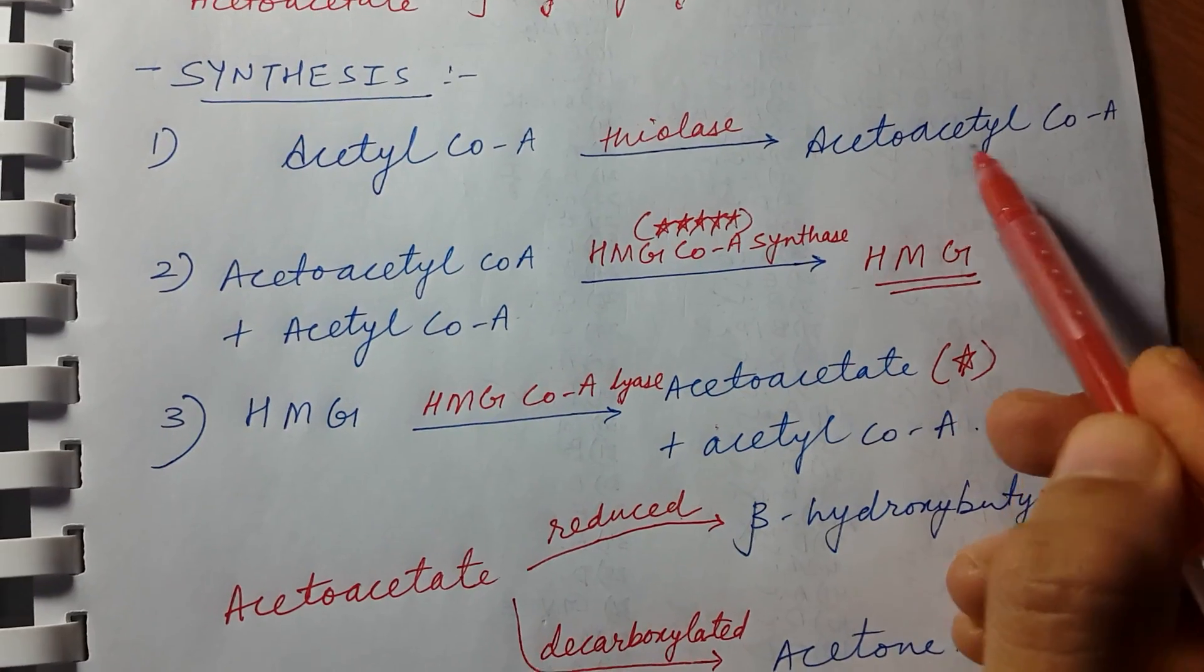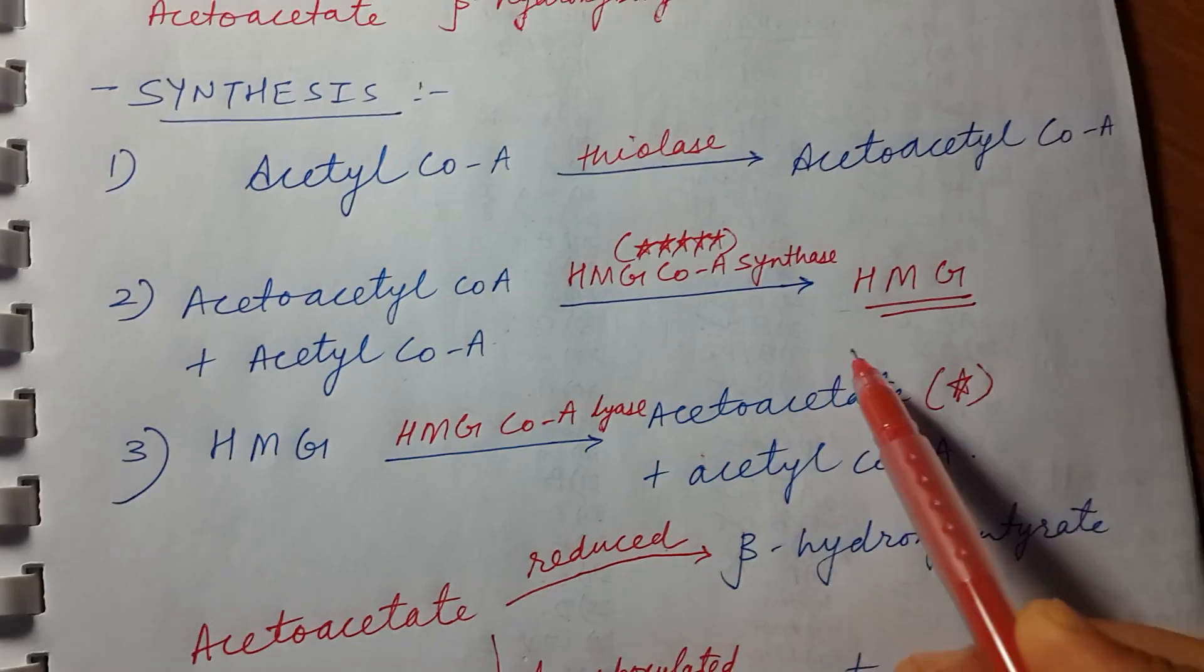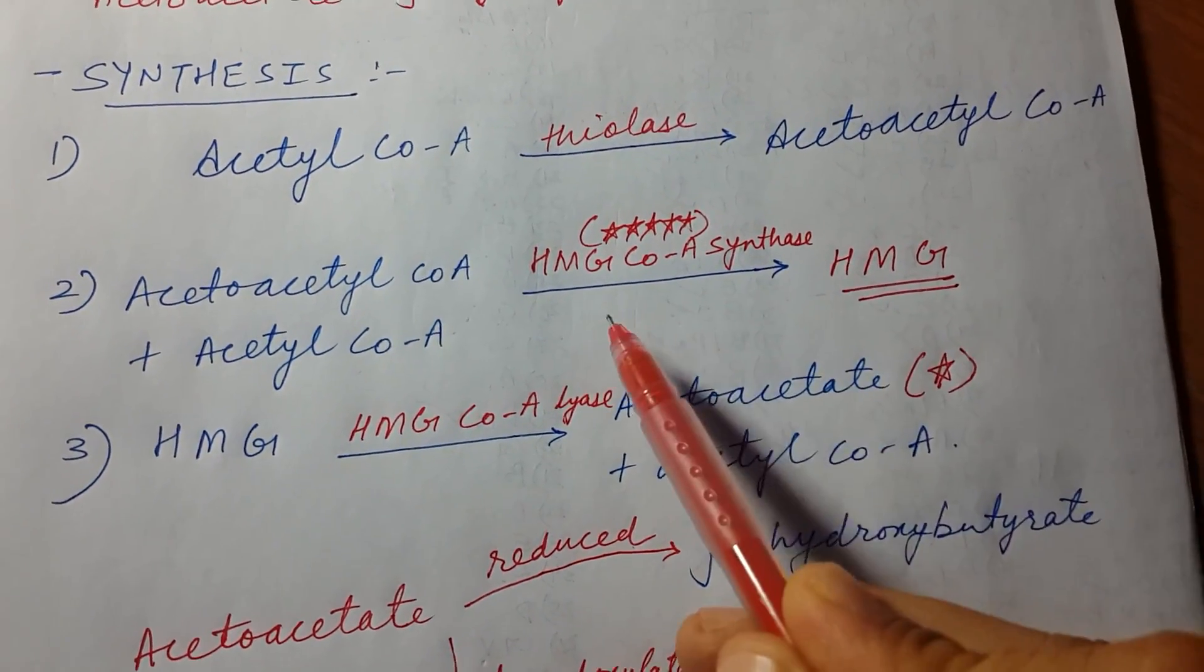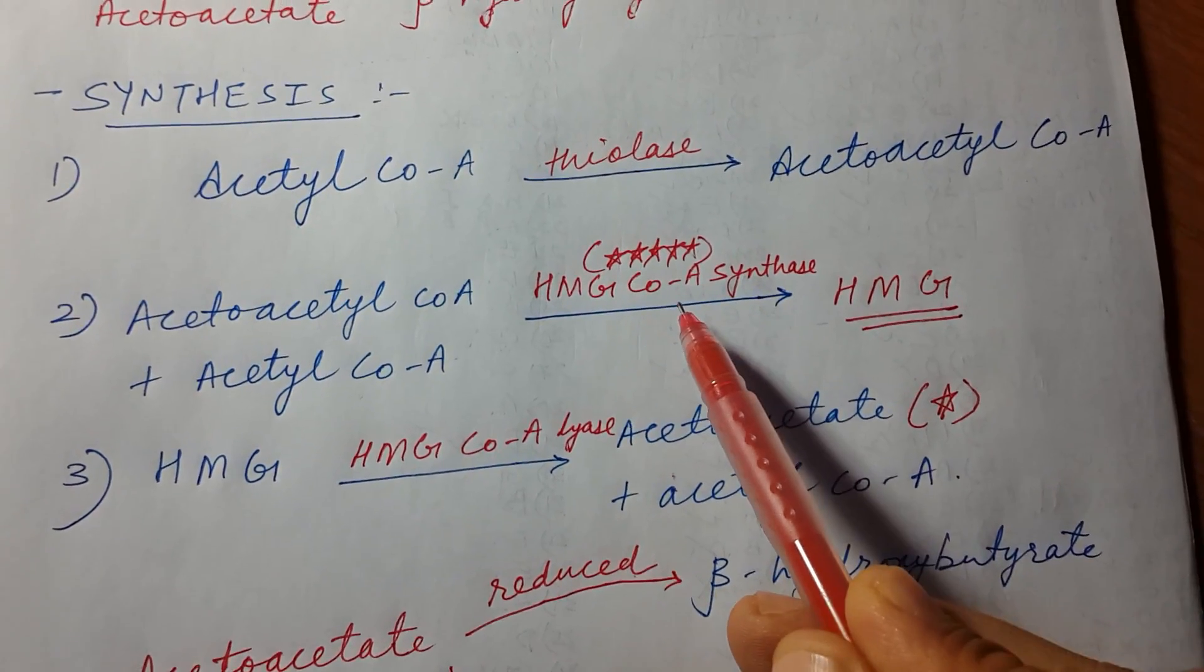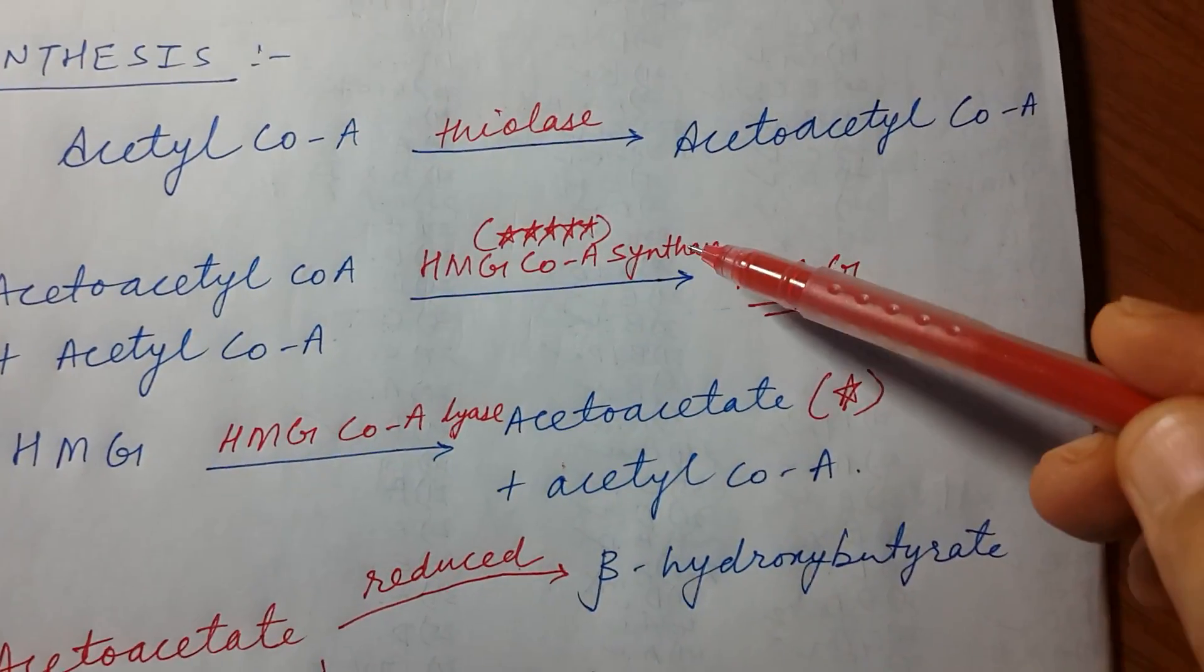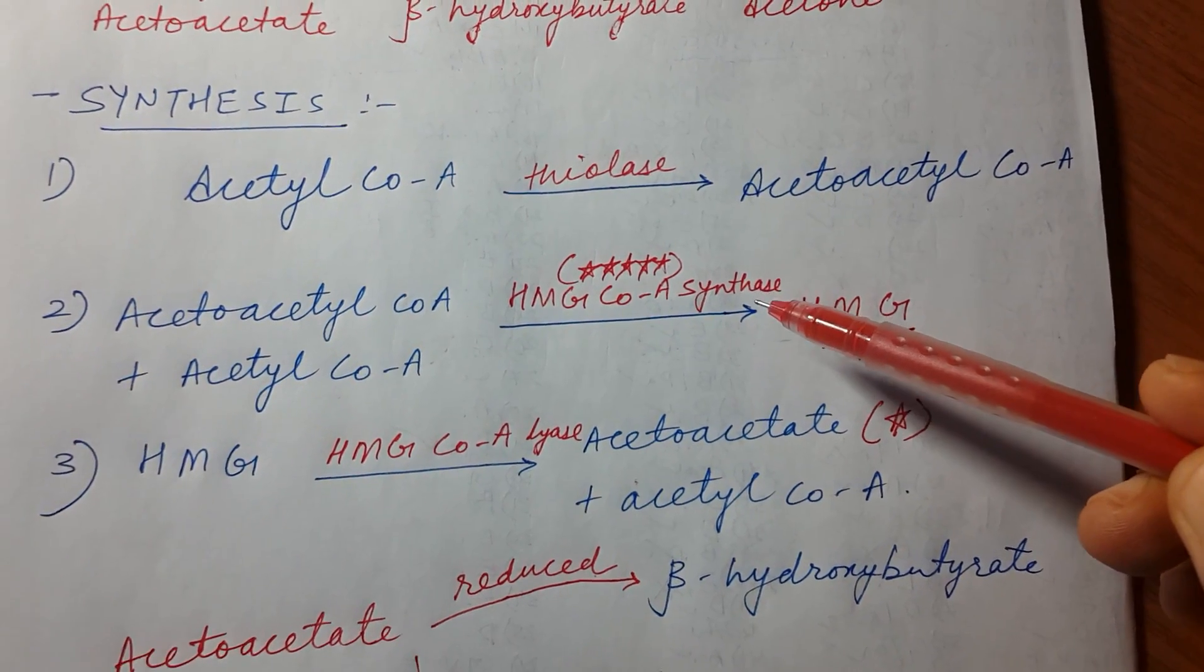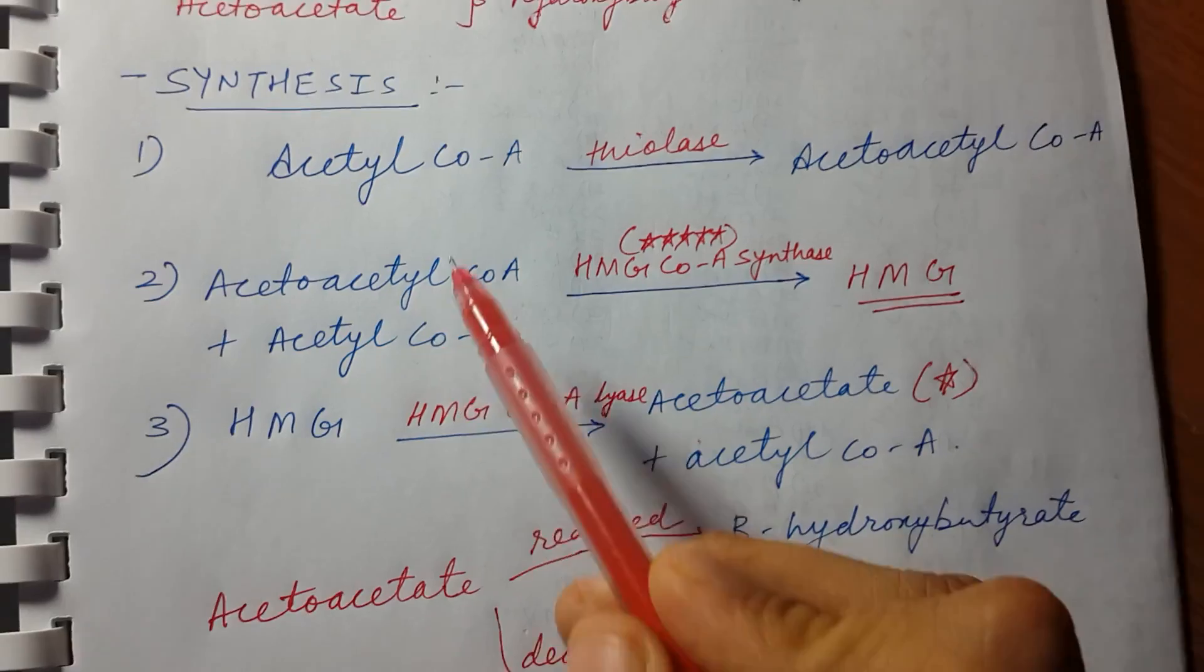And then this acetoacetyl coenzyme A is mixed with another acetyl coenzyme A to form HMG, and the enzyme here is HMG coenzyme A synthase, which is the rate limiting step for ketone body synthesis. The rate limiting step means this is the step which will take the most time in all the reactions.